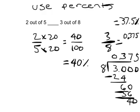So 40% is bigger than 37.5%, so we can place a greater than sign, knowing that 2 out of 5 is greater than 3 out of 8. So that's using percents to compare those two values there.